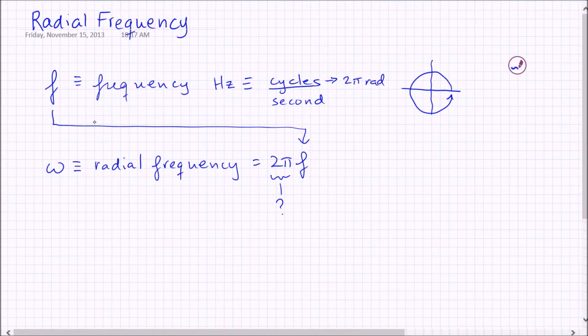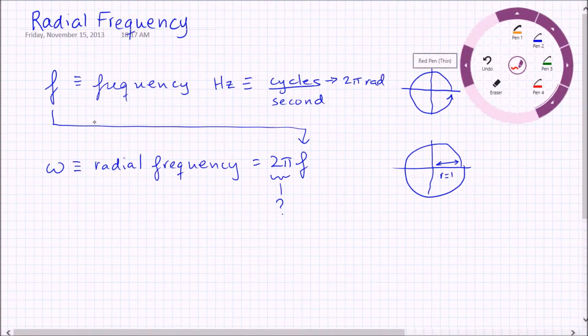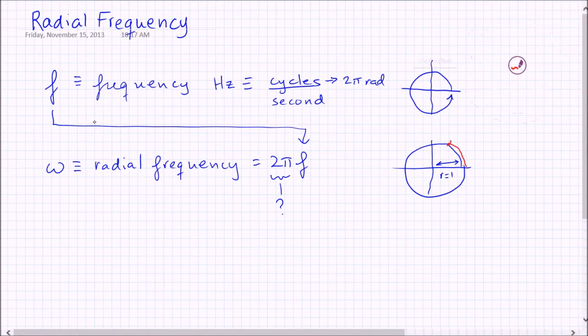A radian is basically the amount of circumference that you play out on a unit circle. So if the radius is equal to one, one radian is distance of one on this unit circle. And that is often connoted with an angle in radians of one.